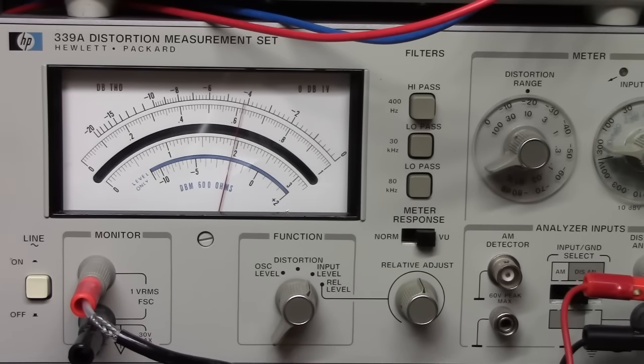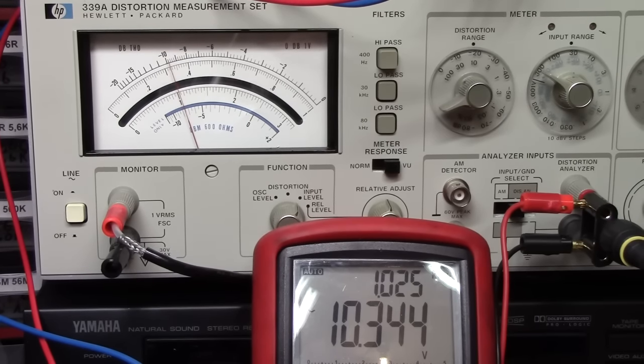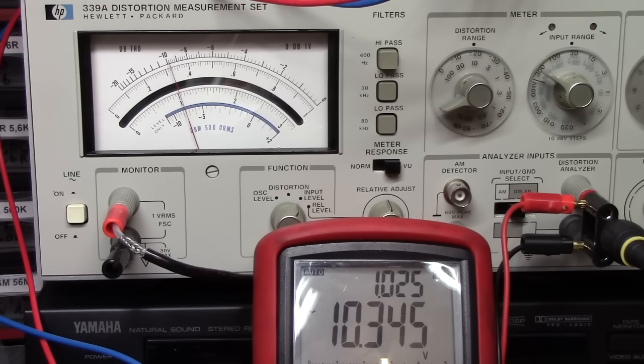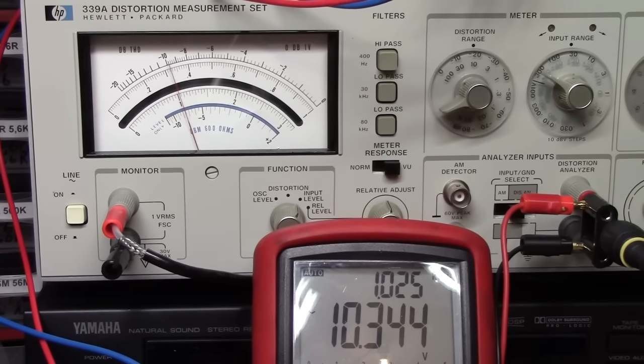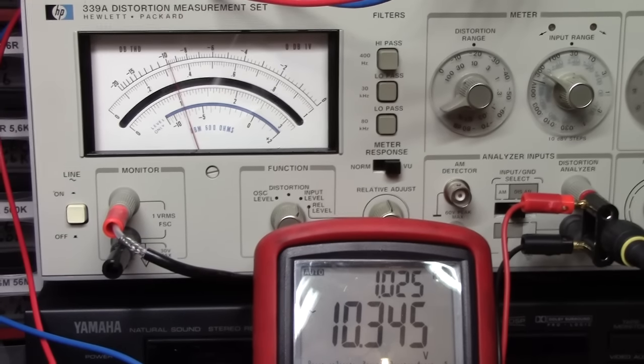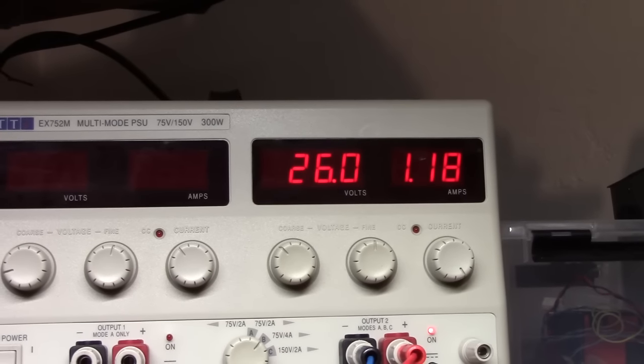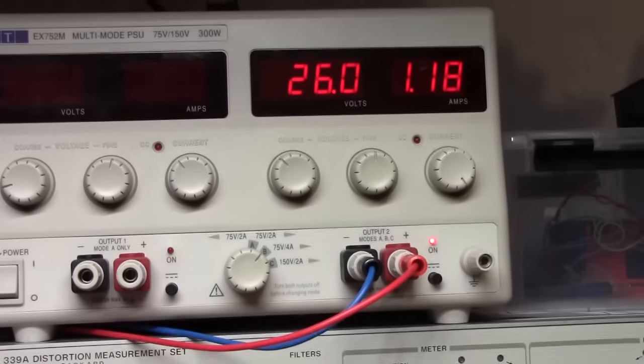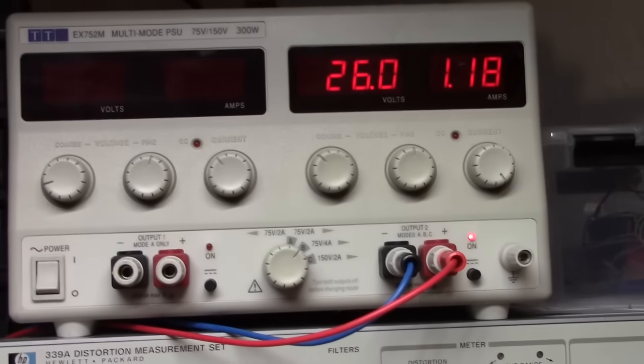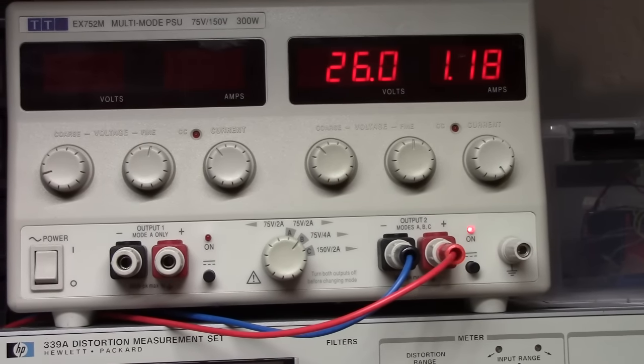And let's just check the efficiency at about half power, into 8 ohms, and, sparing you the math, we are right now pushing 10.34 volts, which is about 26.75 watts total, into both channels, and we are drawing 1.18 amps, we're drawing a bit less a moment ago, and that was 30.42 watts, which gives us an efficiency of just about 88%, which is quite admirable.